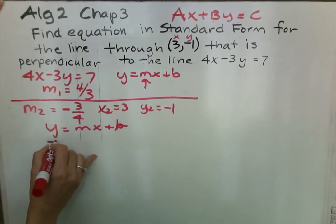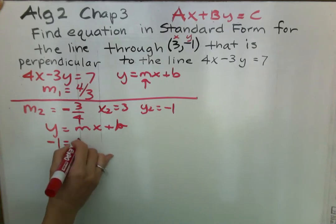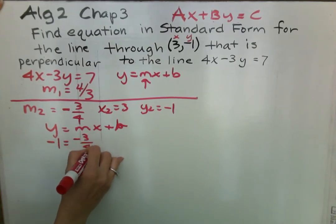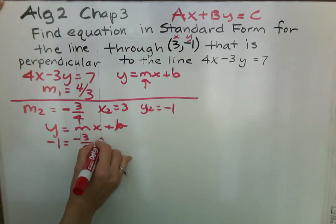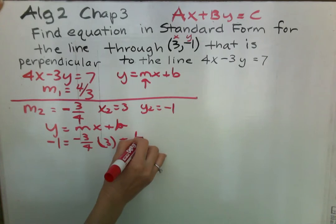Just like the last video, you plug that in, but now the slope is negative 3 fourths. The x is 3 and we're looking for the y intercept.